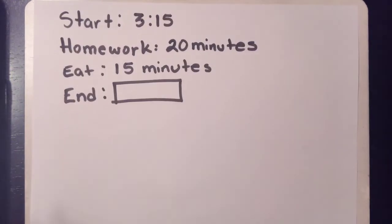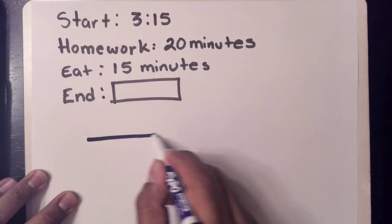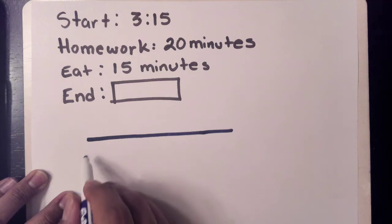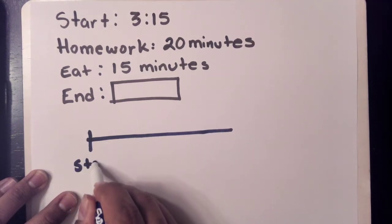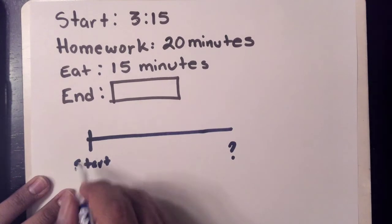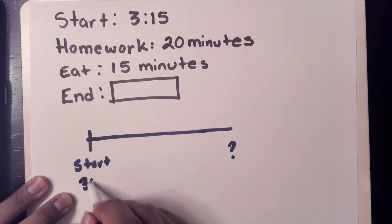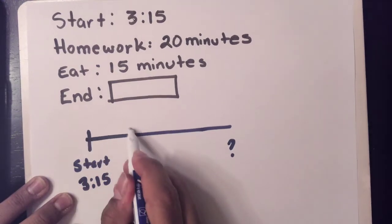So our strategy is going to be the same. We're going to use a number line. Our starting time is right here. We're missing our ending time. So we start at 3:15, and since we go this way to the right, we're going to add to it.